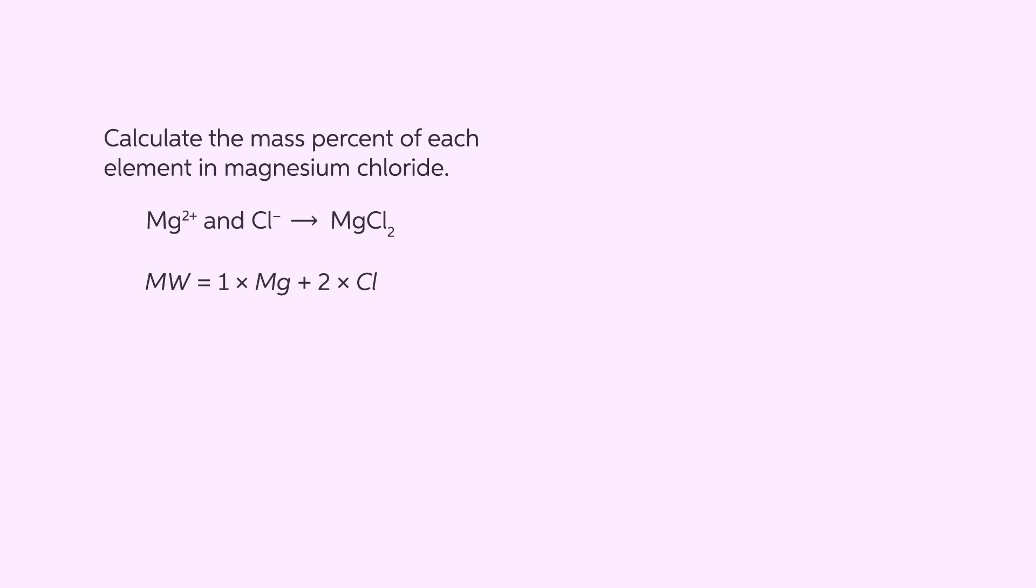We need to calculate the molar mass of magnesium chloride. One mole of magnesium has an atomic mass of 24.30 grams per mole, while the two chlorides each have an atomic mass of 35.45 grams per mole. Adding these together, we get a total of 95.20 grams per mole. Since we are assuming that we have one mole, the sample mass is 95.20 grams.